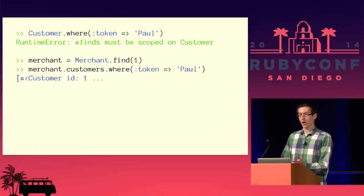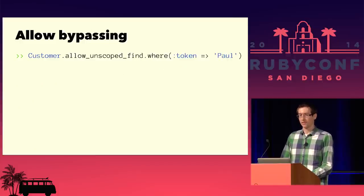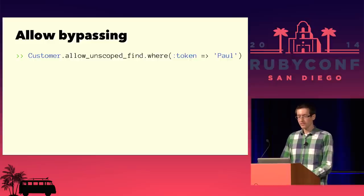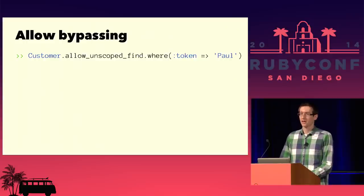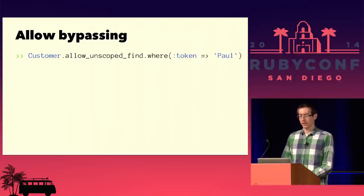There are cases where you need to look things up directly, so we do allow you to bypass it. We have something we call allow_unscoped_find. It serves two purposes: it allows you to bypass the restriction for cases where you really do need to do something different, but it also adds a visual indicator in the codebase. When a developer is reading the code and sees allow_unscoped_find, they know something is different about this code — it doesn't go through the merchant path. Maybe there's a good reason, and someone should think about why. Or maybe there's not a good reason and it should be removed. Either way, it's a note to the developer that this code is special and deserves more careful review.